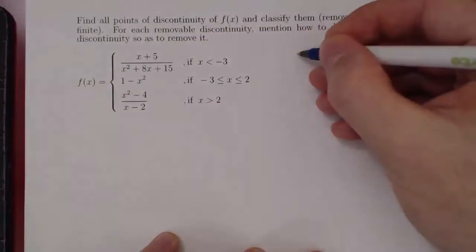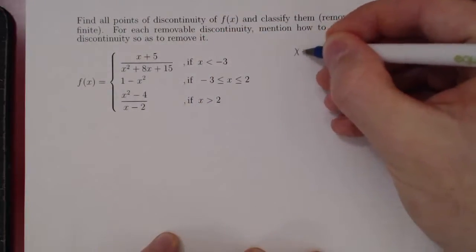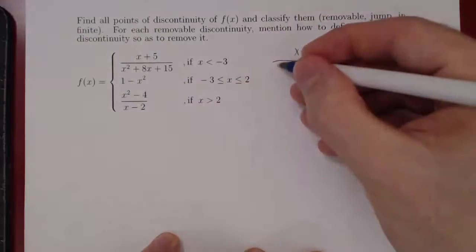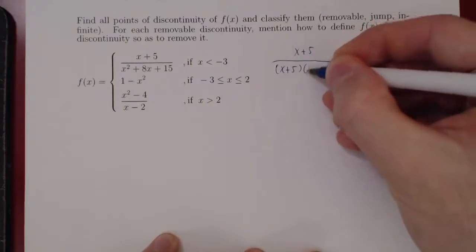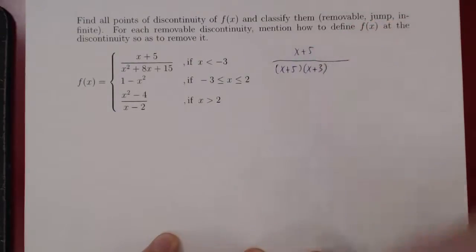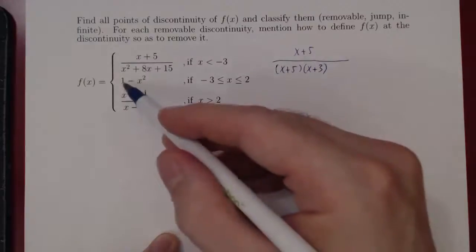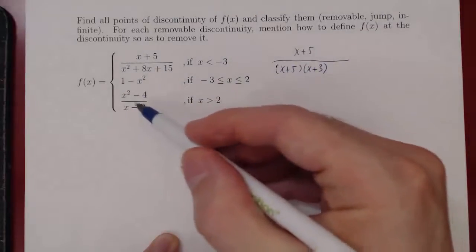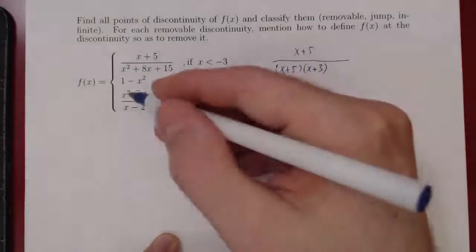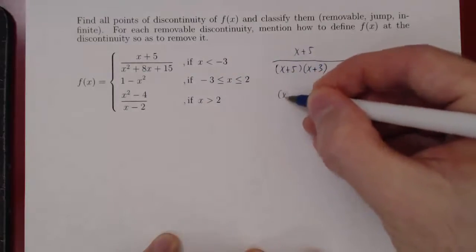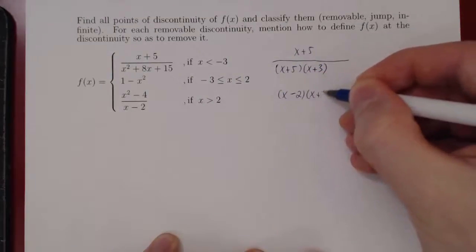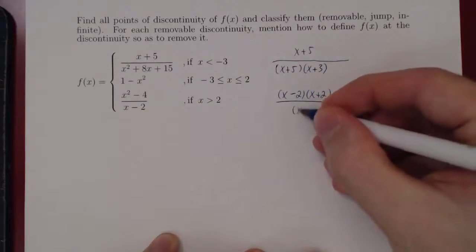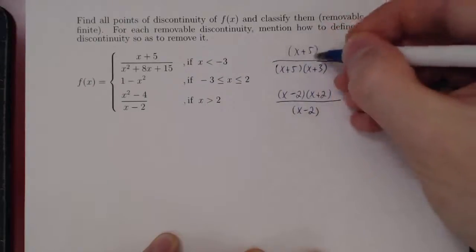The first piece of our function is x plus 5 divided by x squared plus 8x plus 15, which factors as x plus 5 times x plus 3. The second piece is a single polynomial 1 minus x squared, so there's no division and we don't have to factor. The third piece has x squared minus 4, which factors as x minus 2 times x plus 2, over x minus 2.